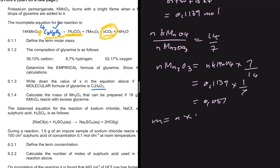The mass equals the number of moles multiplied by the molar mass. The number of moles is 0.057, and the molar mass of Mn₂O₃ is (55 × 2) + (16 × 3). This gives us a mass of 9 grams.